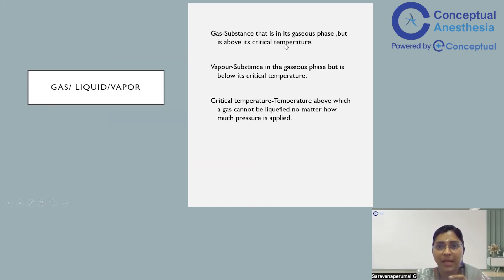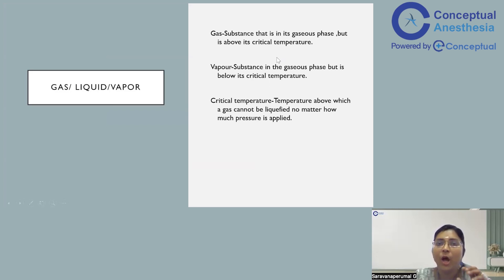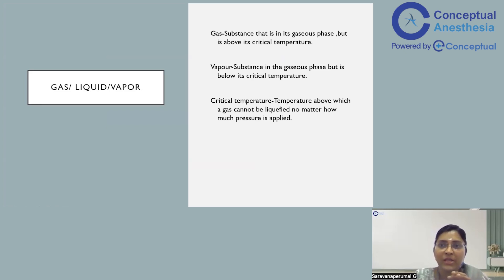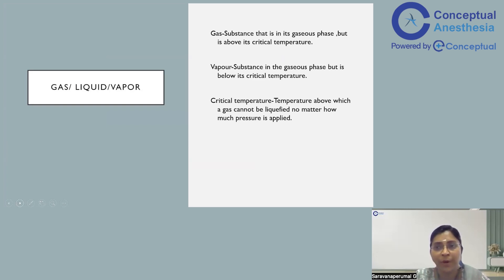What is a gas? It is a substance that is in a gaseous state above its critical temperature. Vapour is a substance which is in gaseous phase below its critical temperature. Critical temperature is the temperature above which the gas cannot be liquefied no matter how much pressure you apply. The critical temperature of nitrous oxide is 36.5 degrees Celsius and for oxygen it is around minus 118 degrees Celsius. For all practical purposes, oxygen supplied in our setting exists as a gaseous form, except for liquefied oxygen available in liquid oxygen tanks.